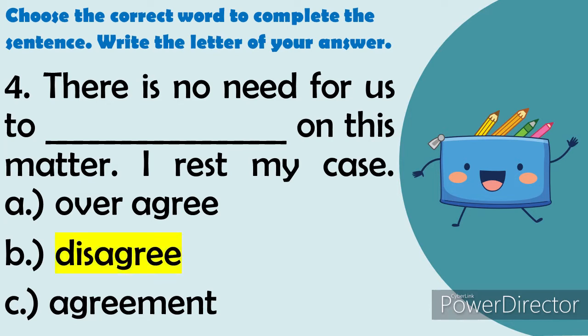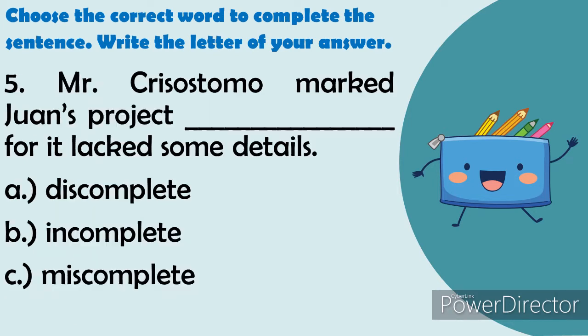Number 5: Mr. Chrysostomo marked Juan's project blank for it lacked some details. The answer is: incomplete.